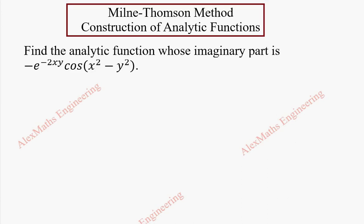Hi students, this is Alex here. In this problem, we are going to find an analytic function whose imaginary part is given. The imaginary part is v, which is minus e to the power minus 2xy times cos of x squared minus y squared.